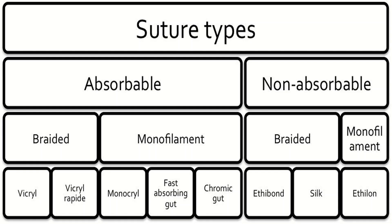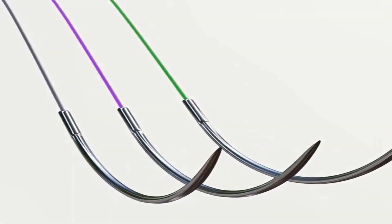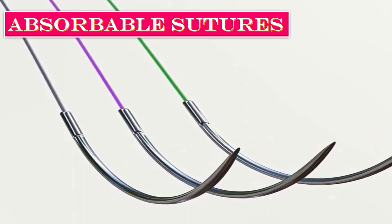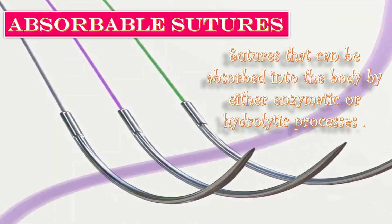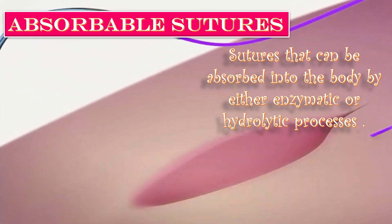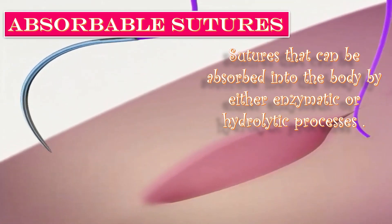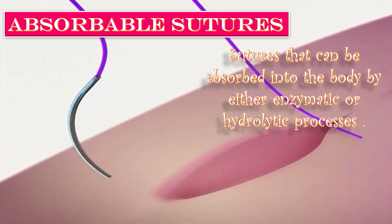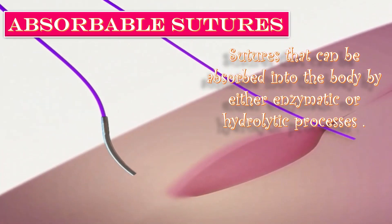Sutures are classified into three categories: absorbable and non-absorbable, braided and monofilament, and synthetic and natural. Absorbable sutures are those that are absorbed into the body by either enzymatic or hydrolytic processes.